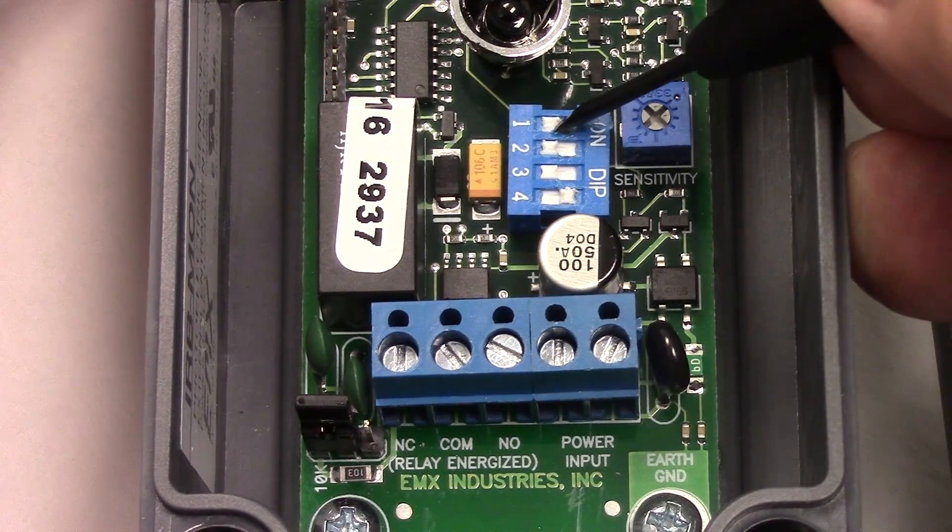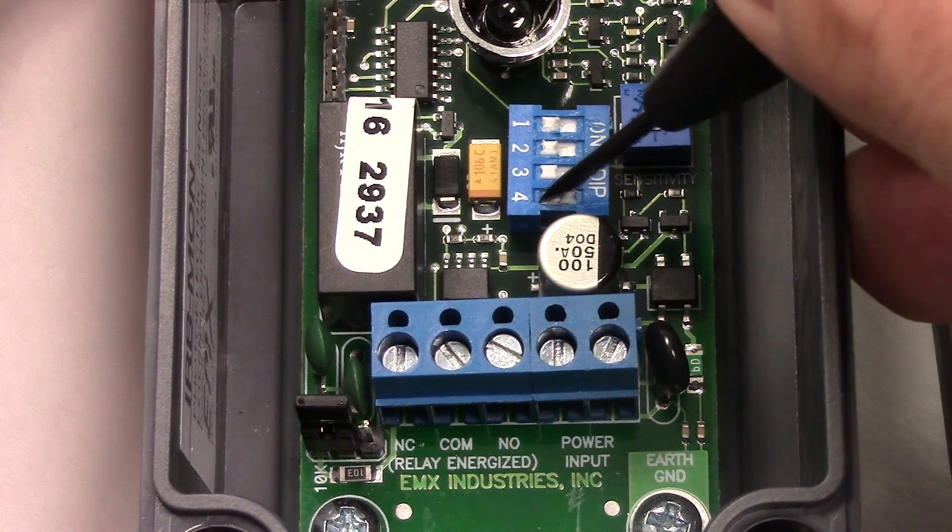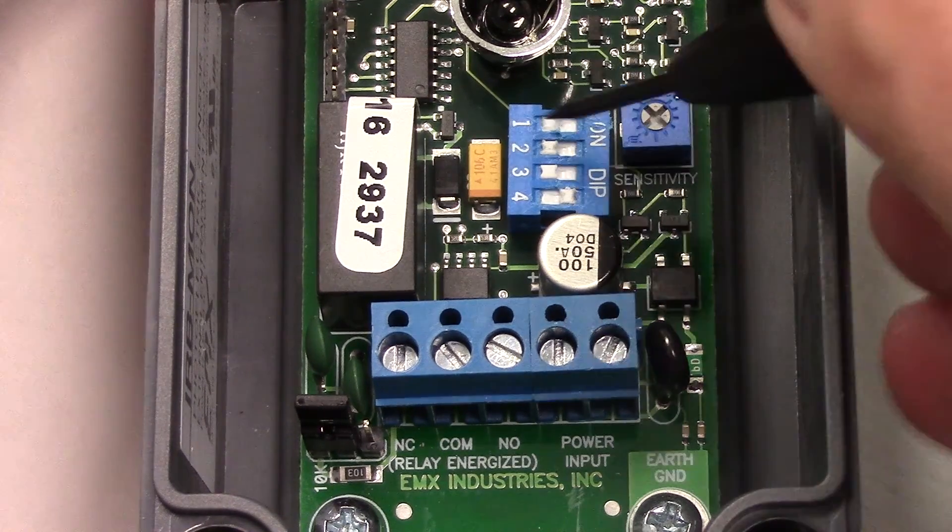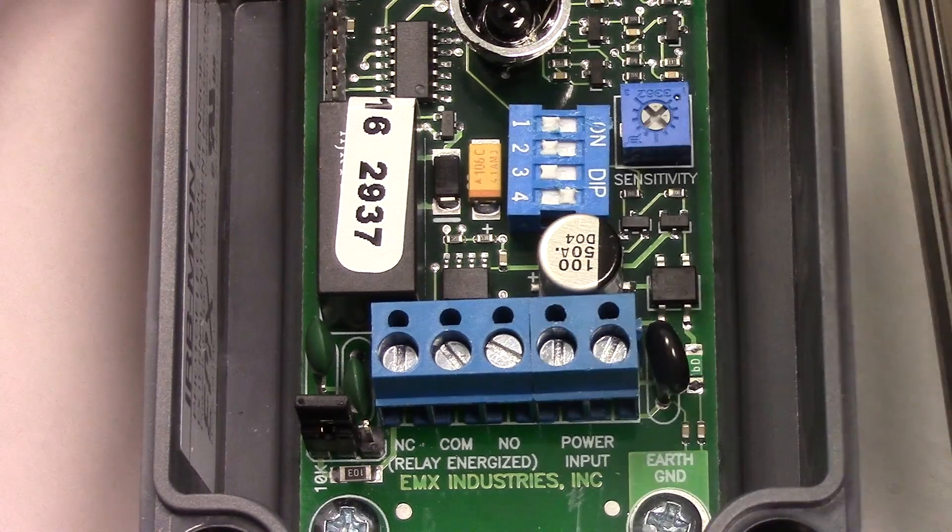So right now we have position one, two, and three off and number four on. Number four is setting up the dark on option.